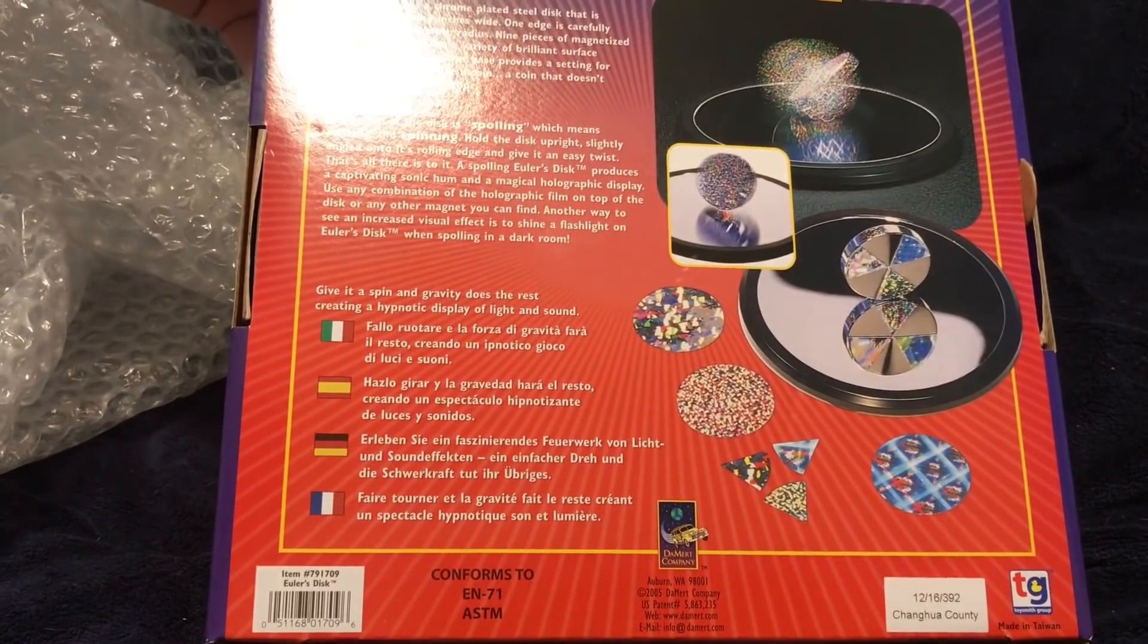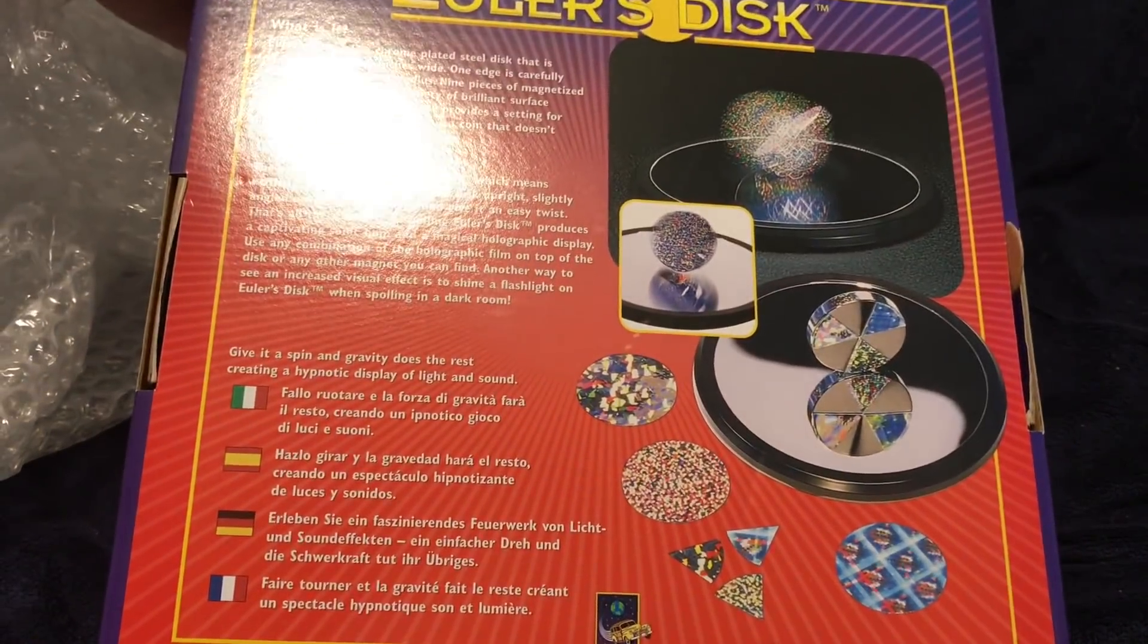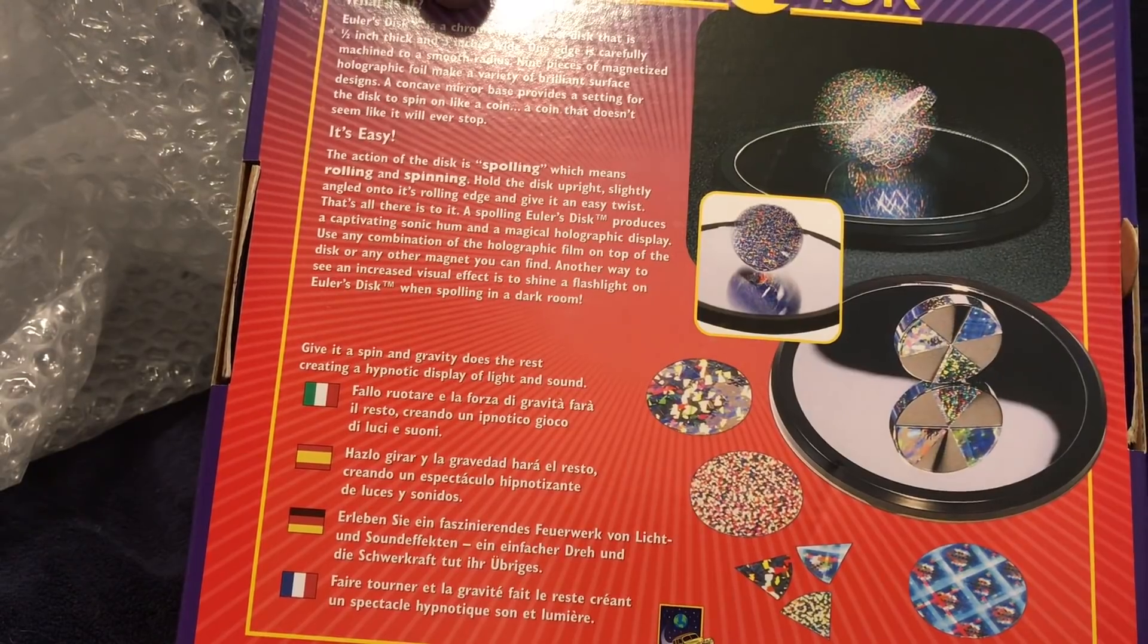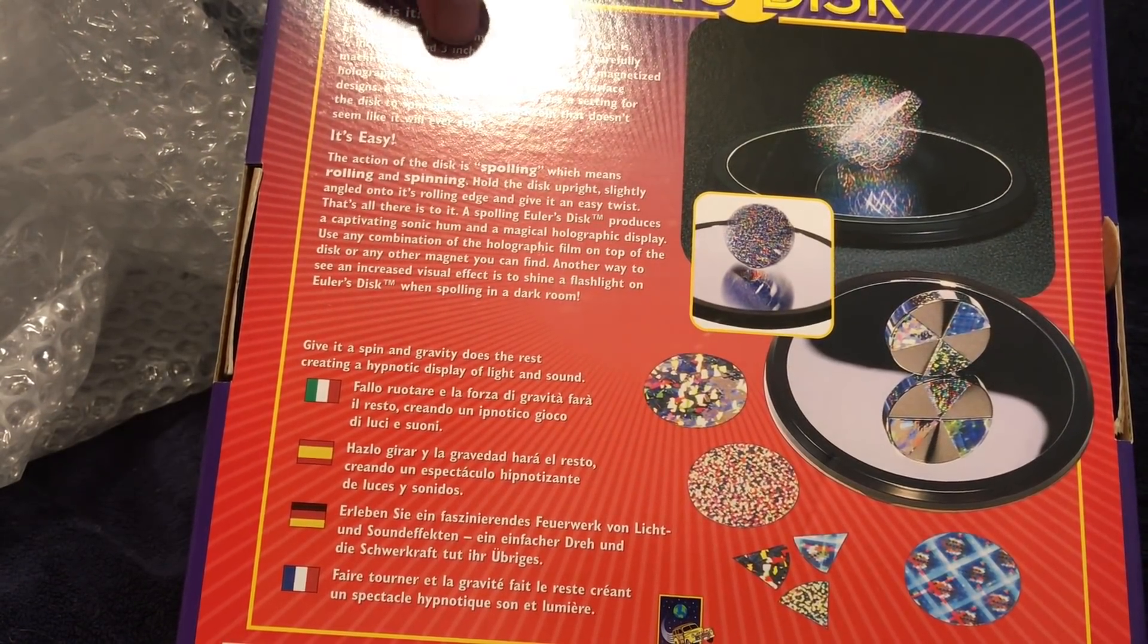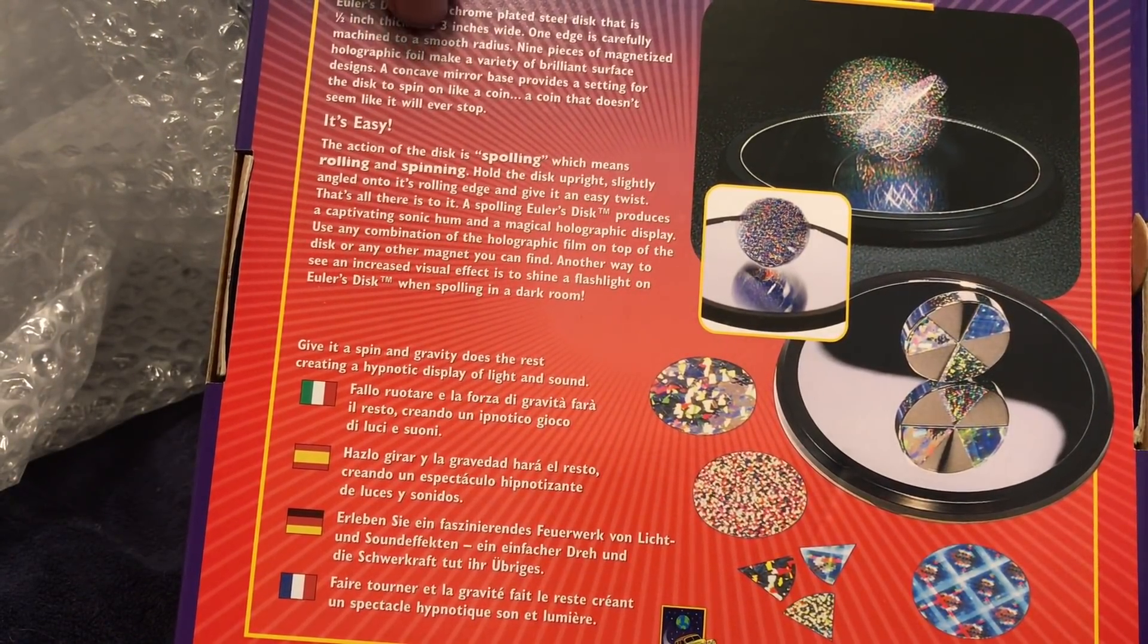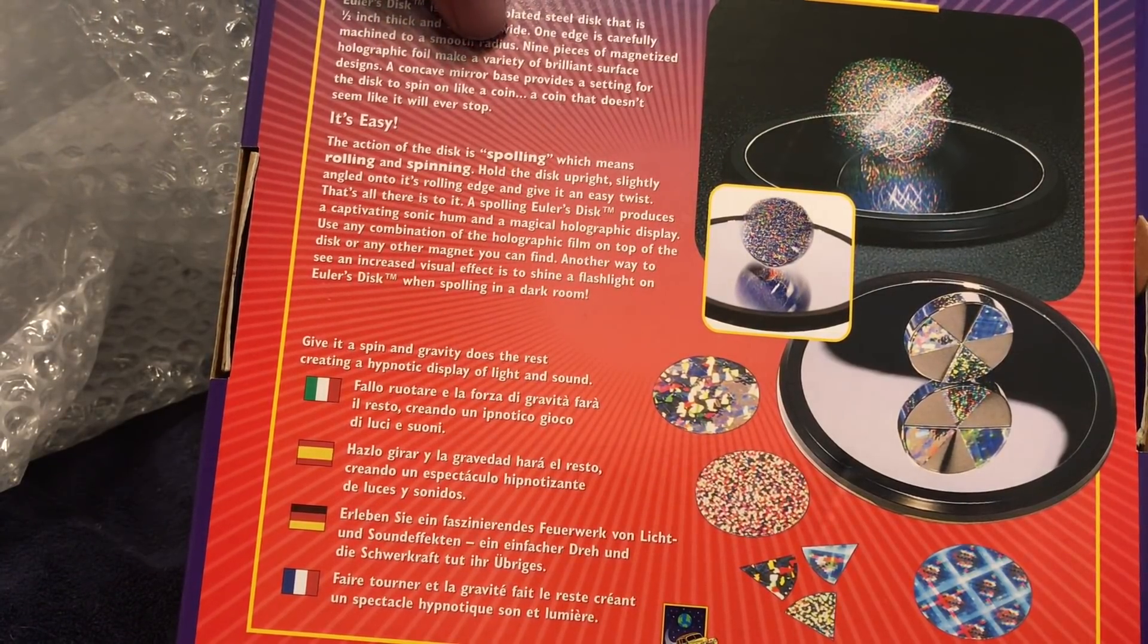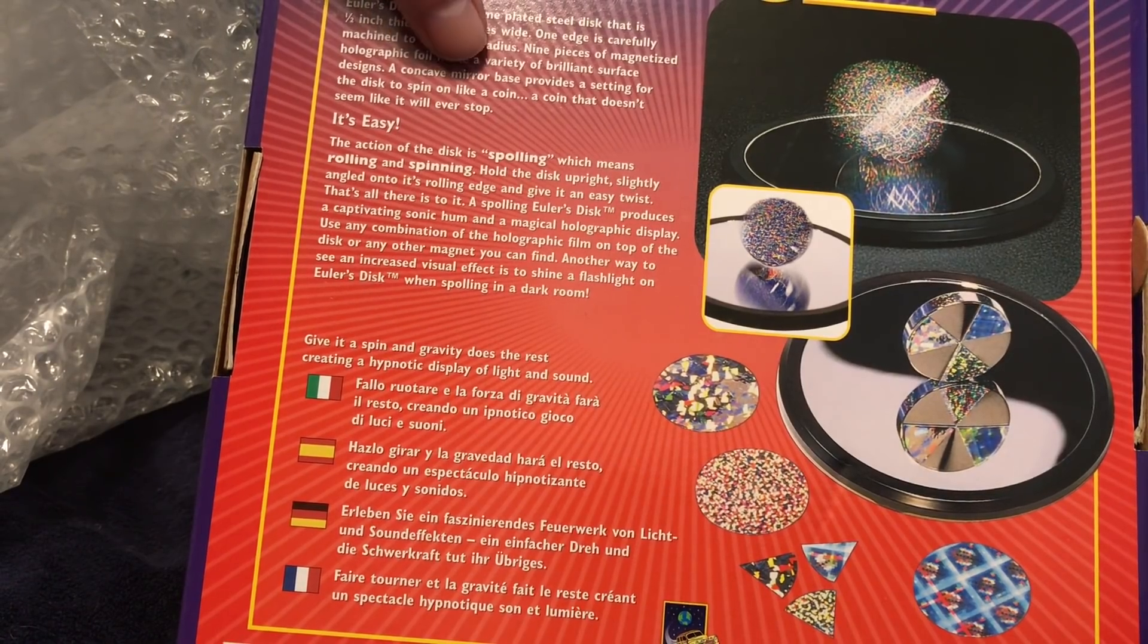Euler's disc. Very cool. What is it? Euler's disc is, let's see here, a chrome-plated steel disc that is a half-inch thick and three inches wide. One edge is carefully machined to a smooth radius. Nine pieces of magnetized holographic foil make a variety of brilliant surface designs. Very interesting.